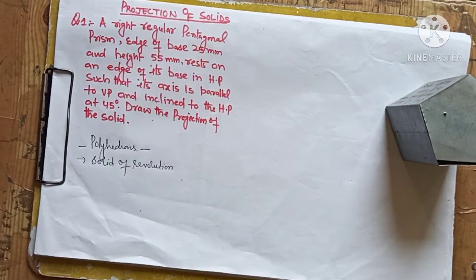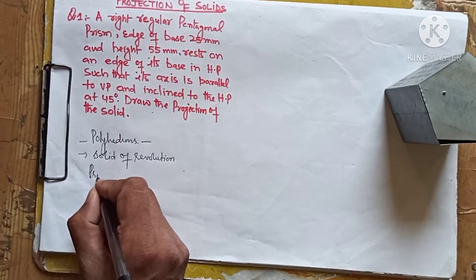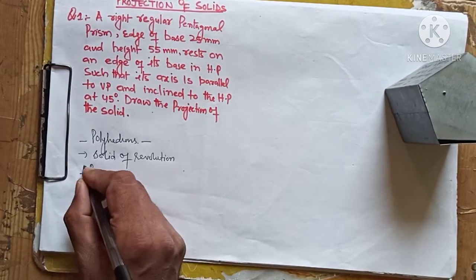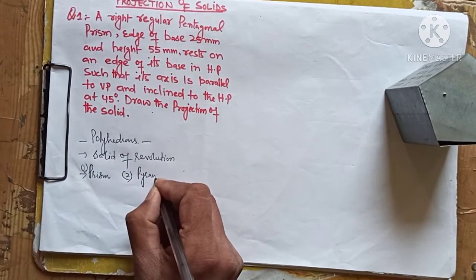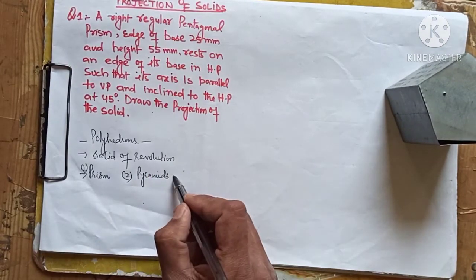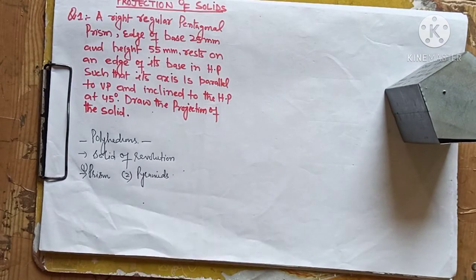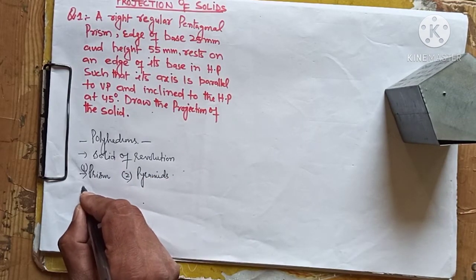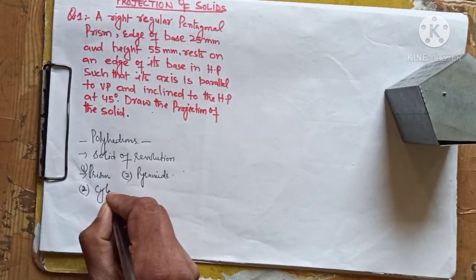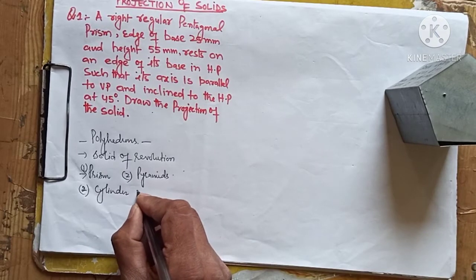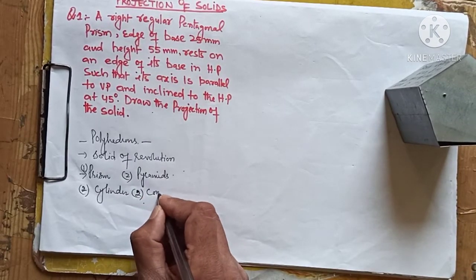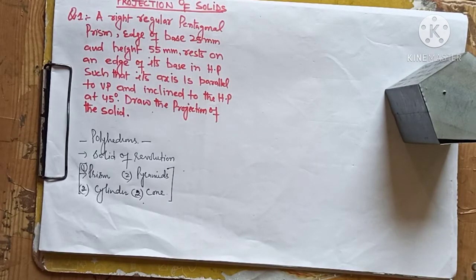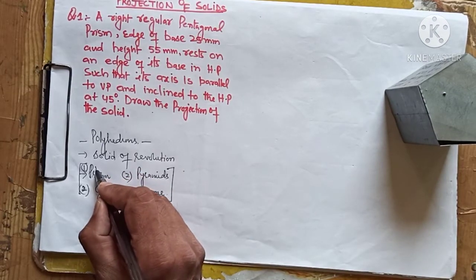For polyhedrons I would like to focus on two: the first is the prism and the second is pyramids. For solids of revolution I would like to focus on the cylinder and the cone. So these are the four things on which I will focus in projection of solids in future classes. Let me first start today with the prism.